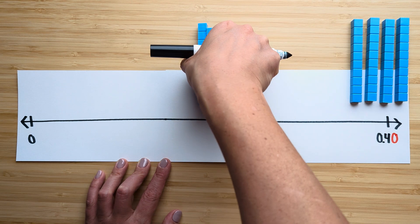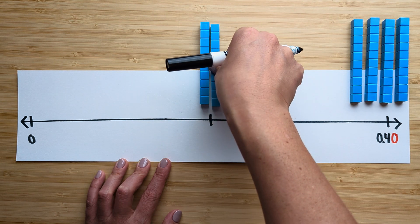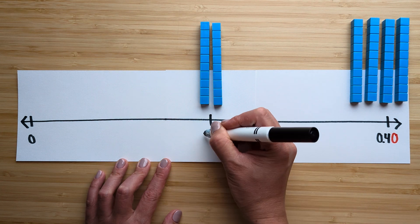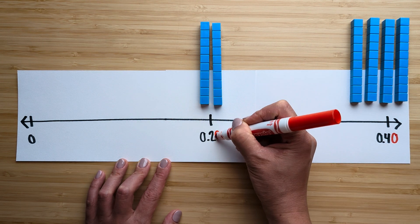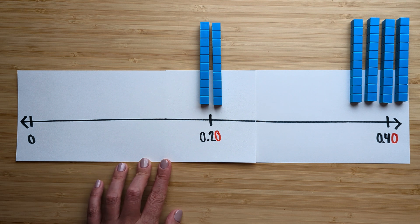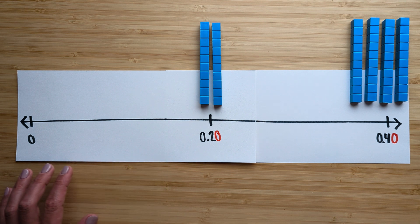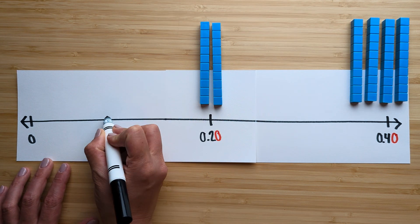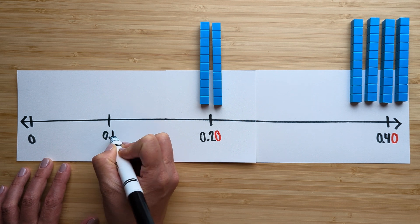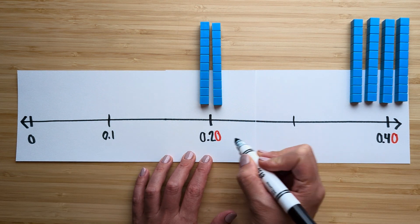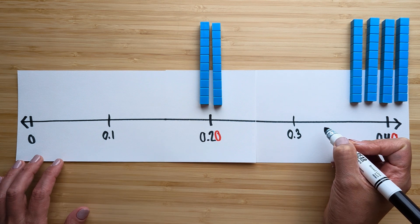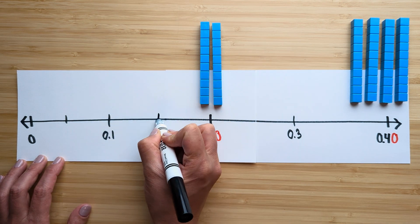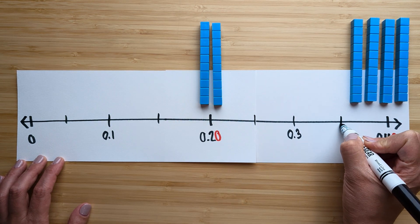So half of four tenths or 40 hundredths is two tenths or 20 hundredths. Okay? And then I know that half of that would be one tenth. And then over here between two and four tenths is three tenths. And in the middle of that, of each tenth, I can write down the hundredths.